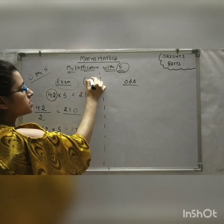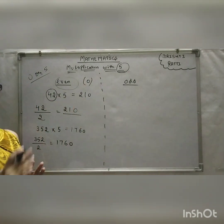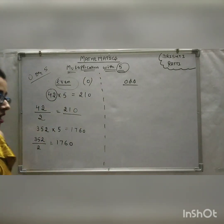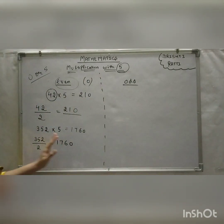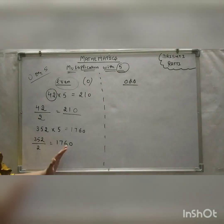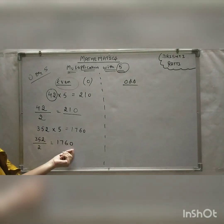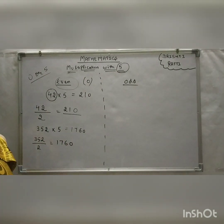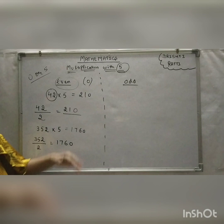To summarize for even numbers: after applying the trick — dividing by 2 — just put a 0 at the end, and that will be your final answer.